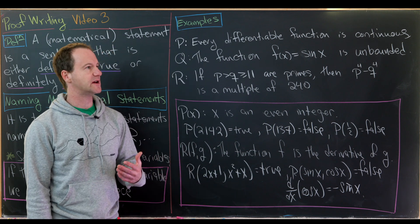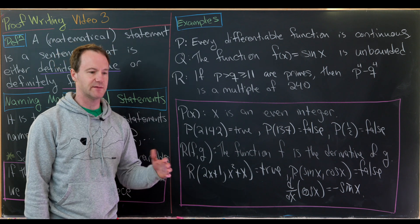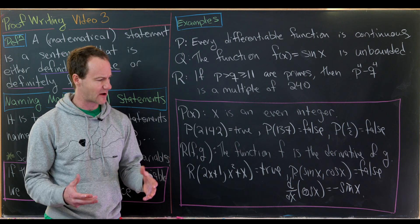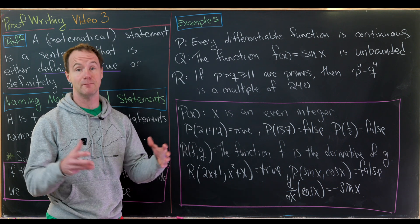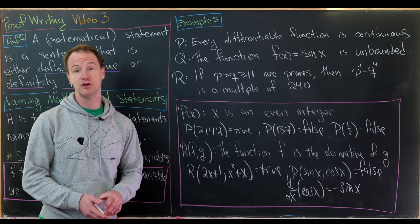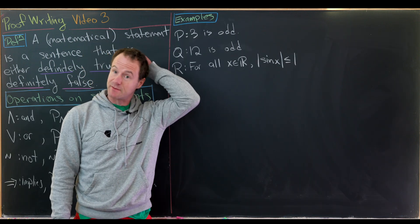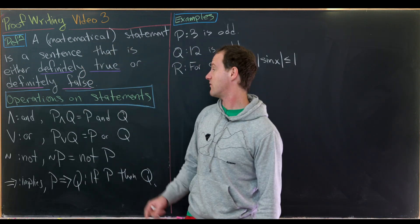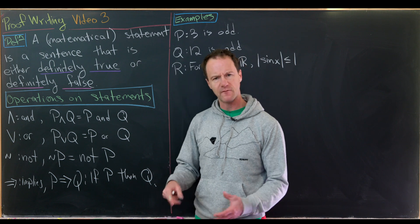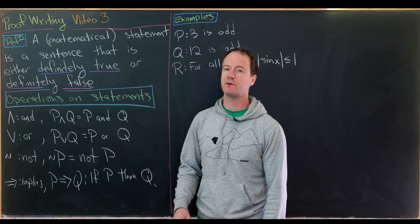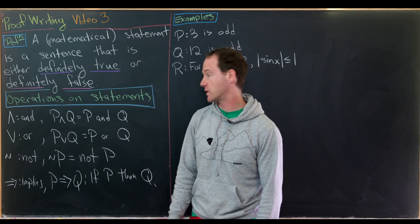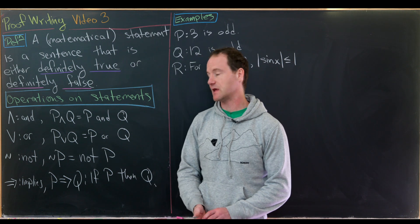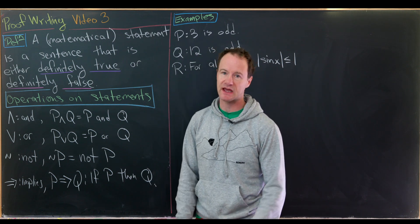Now let's talk about how to combine two mathematical statements. There are four main operations: the AND statement, the OR statement, the NOT statement, and the implication statement. The AND notation uses a wedge shape (∧), read 'p and q.' The OR uses an upside-down wedge or V shape (∨), read 'p or q.' The NOT uses a squiggle (¬), so ¬p is the negation of p. The implication (→) is read 'p implies q' or 'if p then q.'